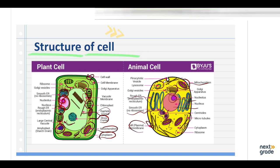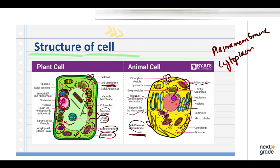There are also lysosomes and a pinocytotic vesicle in the animal cell. There are some common structures present in both plant and animal cells. First is the plasma membrane — it is present in both. Second is the cytoplasm — this whole yellow empty space is the cytoplasm in the animal cell, and the green space is the cytoplasm in the plant cell. Third, the nucleus is present in both.